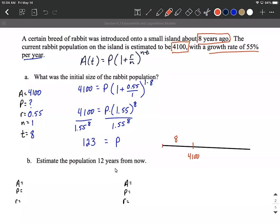Eight years ago, these rabbits were dropped off. And we just did the calculation that we started with 123 rabbits. What we really want to know though is 12 years into the future, so if we start from today, look 12 years into the future, how many rabbits are we going to have on this island?